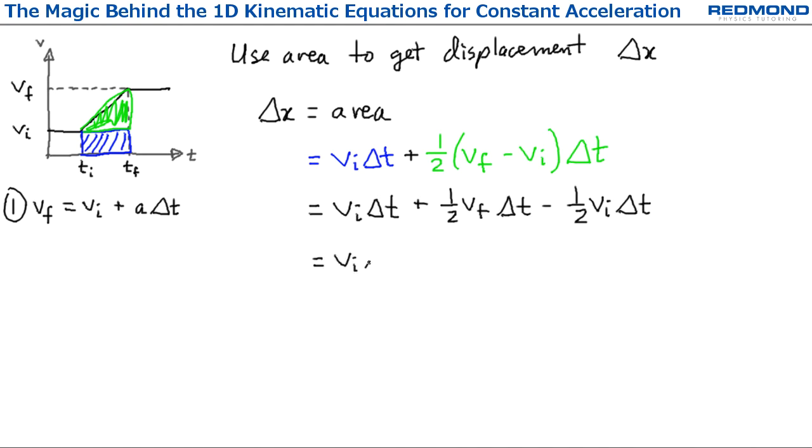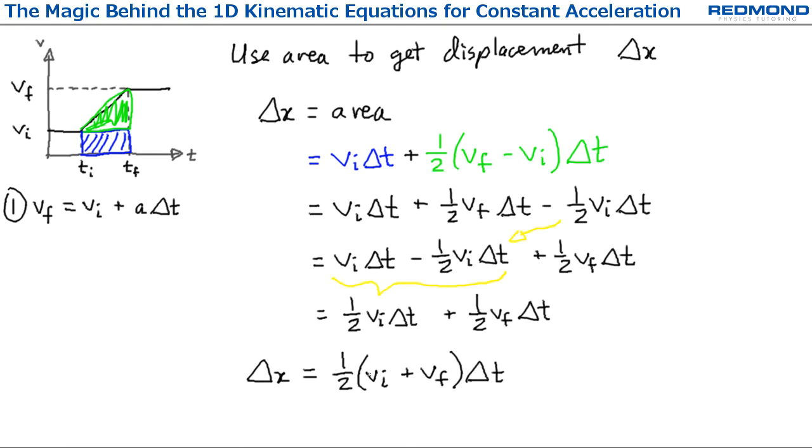Then I expand the brackets and simplify to get the second equation: delta x is equal to one half Vi plus Vf times delta T.